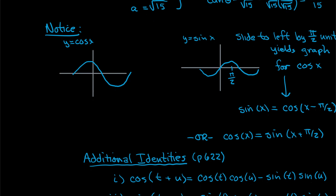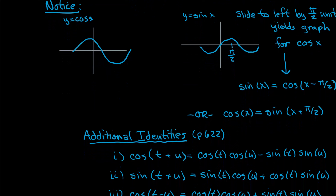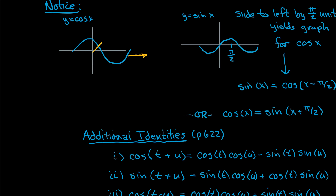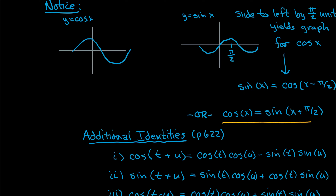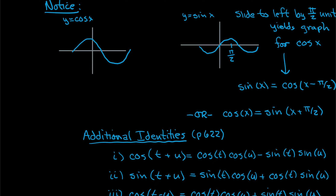The graphs of sine and cosine are the same shape — one is just slid over a bit. If you take the cosine graph and shift it, you get something that looks exactly like sine. With that in mind, we can develop two new identities: sine is the same as cosine shifted by π/2 units, and cosine is sine adjusted by π/2 units. You're just sliding cosine or sine along the x-axis to line up with the other trig function.